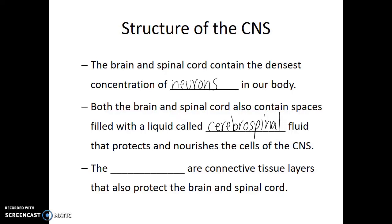The meninges are layers of connective tissue that also protect the brain and the spinal cord. If you've ever heard of a disease called meningitis, meningitis is an inflammation of these meninges. It can be a specially dangerous disease because it can end up applying pressure and potentially even damaging our central nervous system.